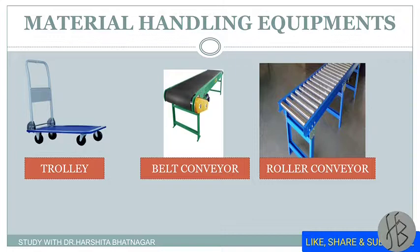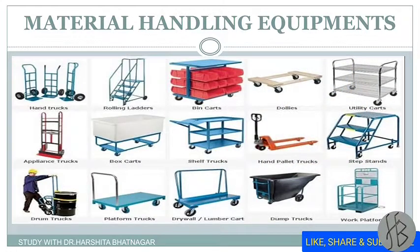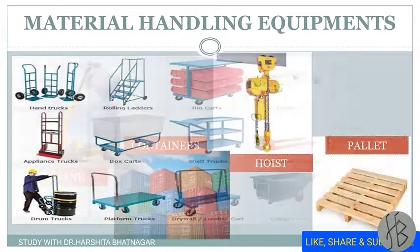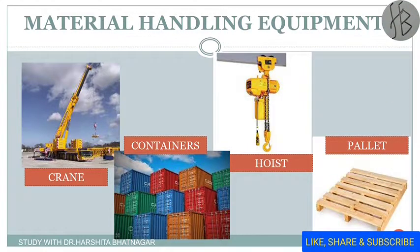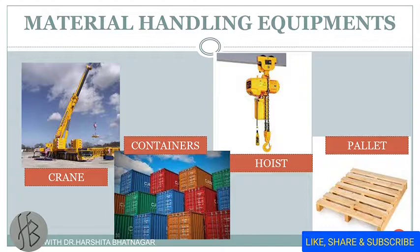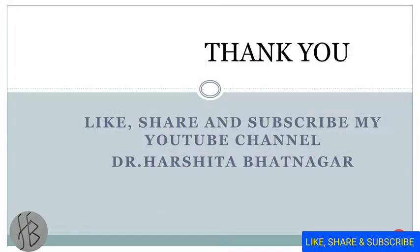Different types of material handling equipment include trolleys, belt conveyors, and roller conveyors. There are also hand trucks, rolling ladders, bin carts, dollies, utility carts, step stands, work platforms, dump trucks, lumber carts, box carts, and drum carts. Other equipment includes cranes, containers, hoists, and pallets. These are the important material handling equipment used in any factory or plant for carrying loads from one place to another. I hope you are all able to understand what material handling is and why it is important. Thank you. If you have any query, you can write.